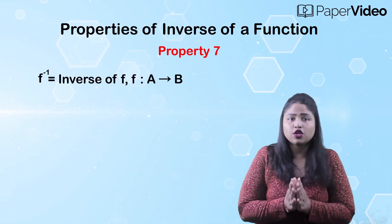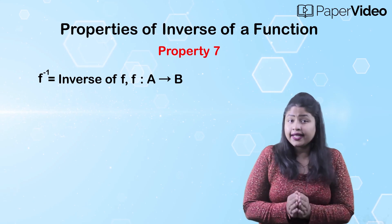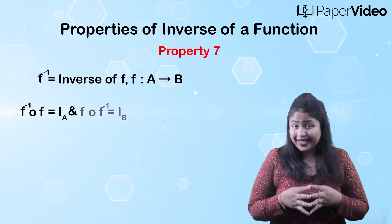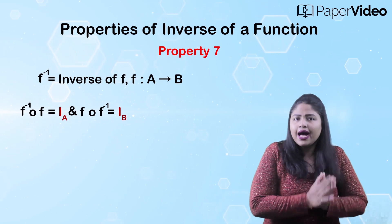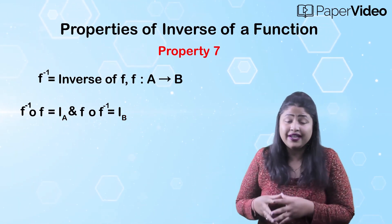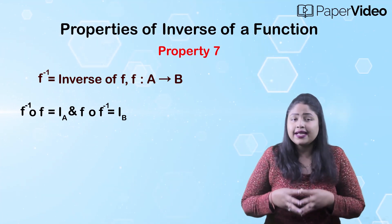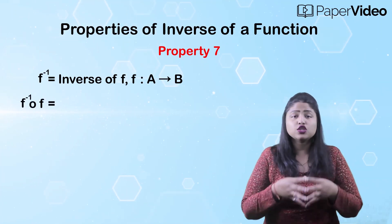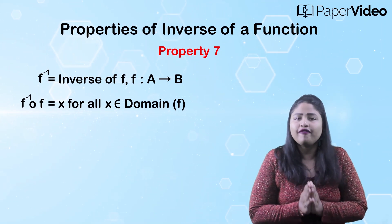According to the seventh property, if f inverse is an inverse of the function f defined on two different sets, then the composition functions f inverse of f equals I_A and f of f inverse equals I_B, where I_A and I_B are the identity functions on sets A and B respectively. This means that f inverse of f equals x for all x belonging to the domain of f.